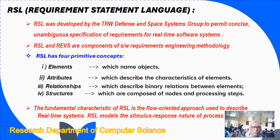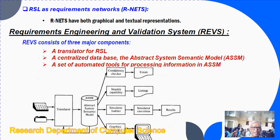RSL was developed by TRW Defense and Space Systems to permit concise, unambiguous specification of requirements for real-time systems. RSL and REVS are components of the Software Requirements Engineering Methodology. RSL has four primitive concepts: elements, attributes, relationships, and structures. The Requirement Engineering Validation System (REVS) has three component parts: a translator, the ASSM, and a set of automated tools. The translator is used to translate RSL into a centralized database with system semantic models, and corresponding outputs are generated by the automated tools.